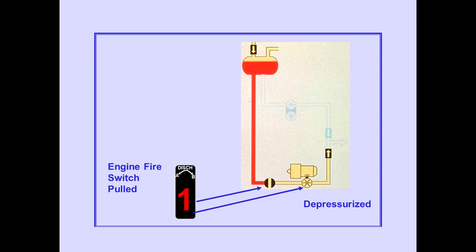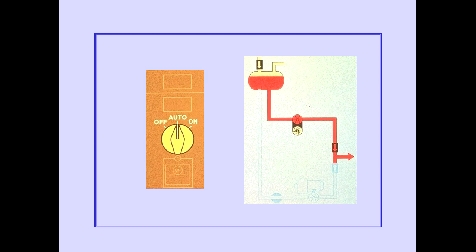Pulling the engine fire switch closes the hydraulic shut-off valve and depressurizes the engine pump. Let's now discuss the demand pumps. The demand pumps are controlled by rotary selectors with three positions: off, auto, and on.